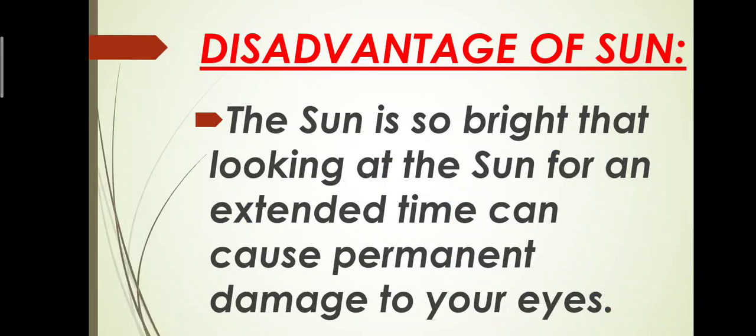Now what is the disadvantage of sun? For example, if you kept on looking towards the sun what will happen? The sun is so bright that looking at the sun for an extended time can cause permanent damage to your eyes. Our eyes can be damaged.